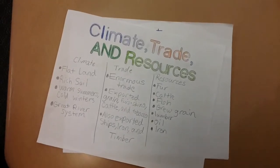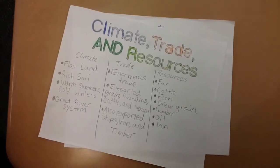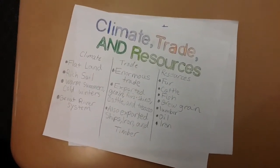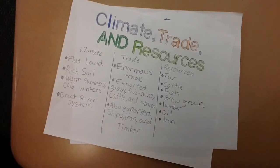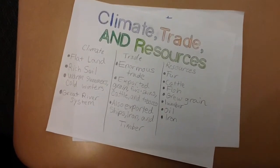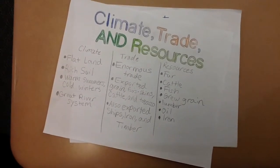Their trade was enormous. They exported goods, especially grain. Their resources were fur, cattle, fish, grain, lumber, oil, and iron.